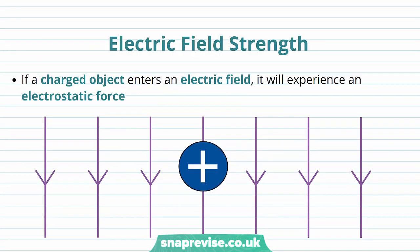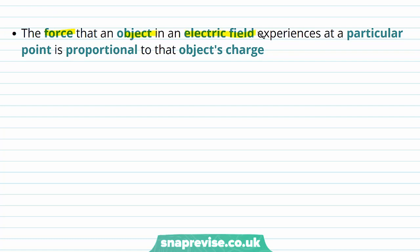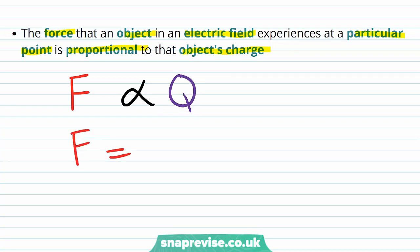Now we're going to discuss how we quantify electric field strength. We know that if a charged object enters an electric field, it's going to experience an electrostatic force. The force that an object in an electric field experiences at a particular point is proportional to the object's charge. So the force F at a particular point is proportional to the charge Q, and we can say that the force is equal to a constant of proportionality K times Q.